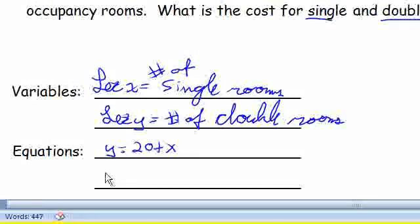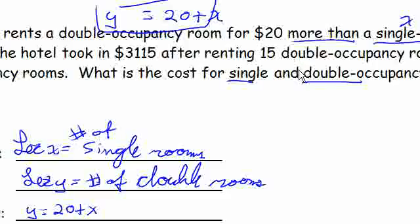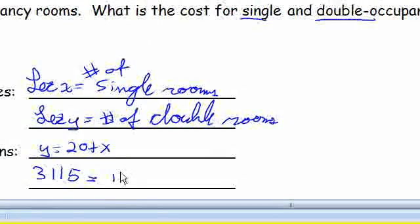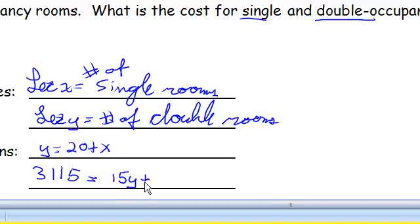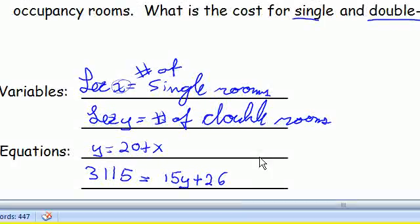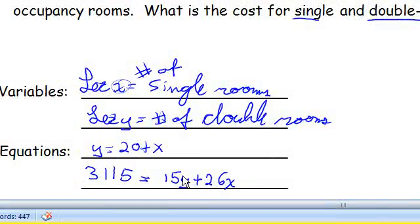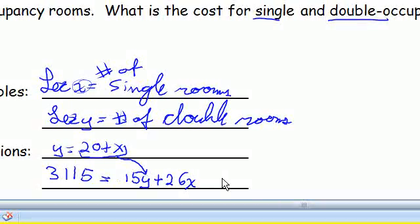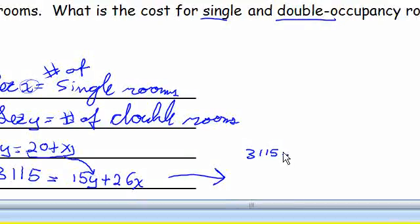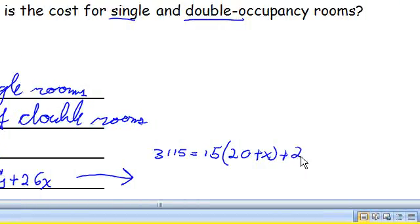One night, a hotel took in $3,115 after renting 15 double occupancy rooms. So 15 double occupancy rooms, 15y, and 26 single occupancy rooms, which is x. So there's our second system and this is a substitution. So what we'll do is I see that there's a y down here, but we have y isolated up here. So I'm going to take that and sub it right in for y right there. So let's rewrite this equation.